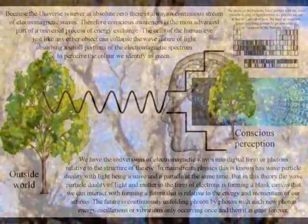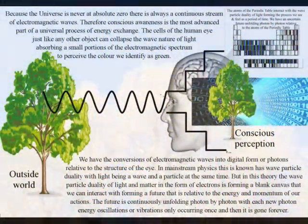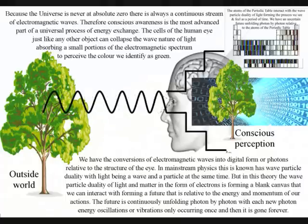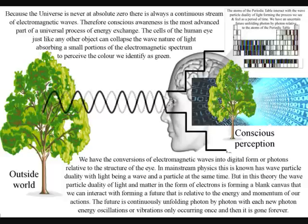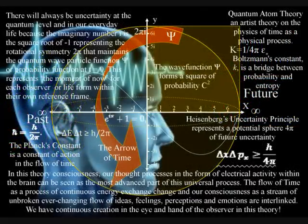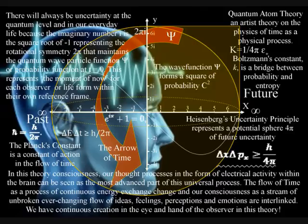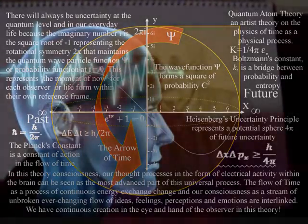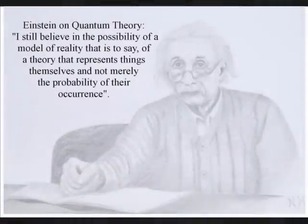What is actually happening is the conversion of analog waves into digital form or photons relative to the structure of the eye. In mainstream physics this is known as wave-particle duality with light being a wave and a particle at the same time. But in this theory the wave-particle duality of light and matter in the form of electrons is forming a blank canvas that we can interact with forming a future relative to the energy and momentum of our own actions.